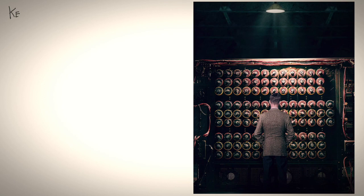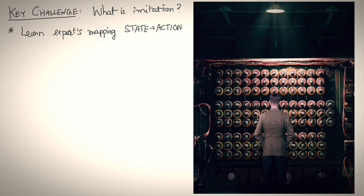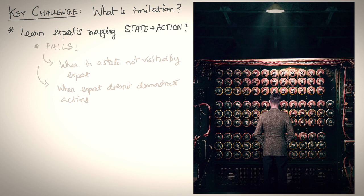And that brings us to an end of this first lecture. To recap, the key challenge we took on today is to try to come up with a definition for imitation. We considered one obvious approach, directly tried to learn the expert's mapping from state to action, and saw that this catastrophically fails. First, whenever the learner enters a state not visited by the expert, it doesn't know what to do. Second, it's not always possible for experts to demonstrate actions.